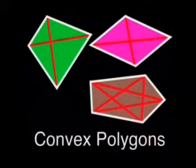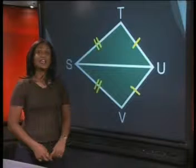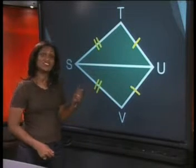For a convex polygon, all the diagonals lie inside the polygon. Can you identify the diagonals in the shape?